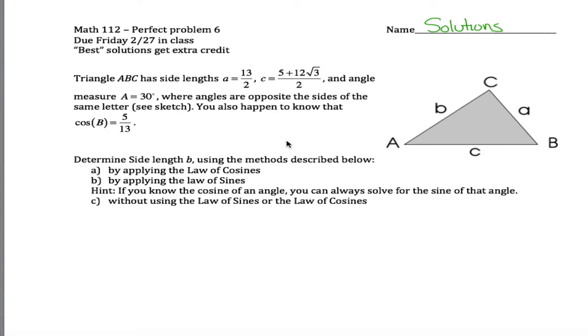For practice problem 6 for Math 112, I've given this triangle here and told that length a is 13 halves. Sorry about the fractions. Side c, the length of side c is that mess, 5 plus 12 root 3 divided by 2. I'm not just being mean here. I picked these out so that some answers will work out nicely.